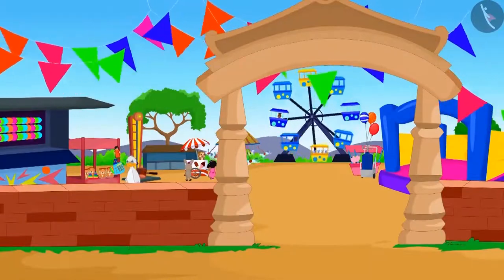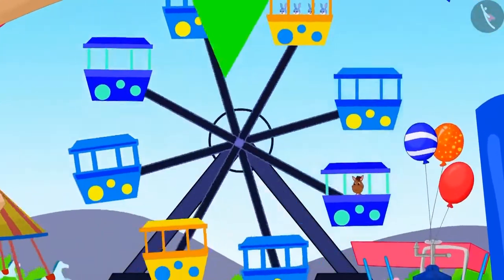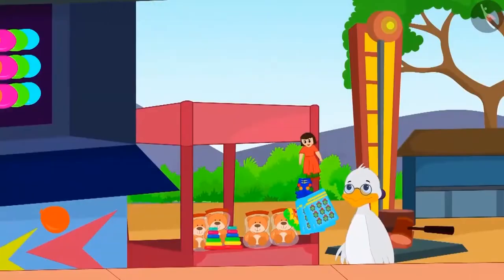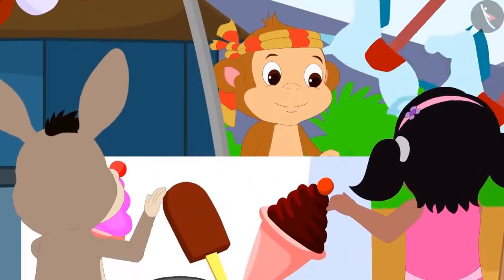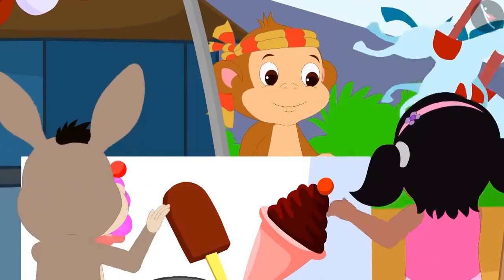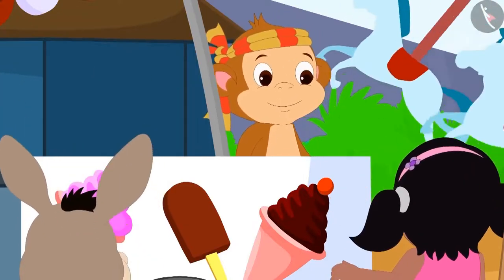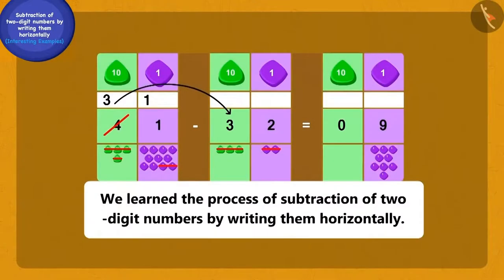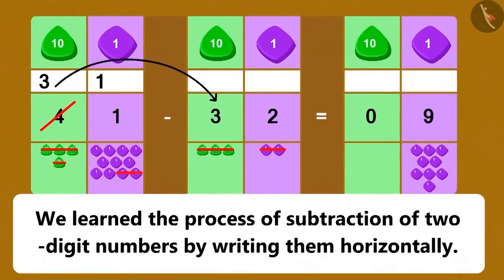Raju and Bablu kept wandering in the fair and solving the questions of subtraction. Children, you should also find such questions of subtraction around you and try to solve them. Children, in this lesson, we have seen some interesting examples of subtraction by writing two-digit numbers horizontally.